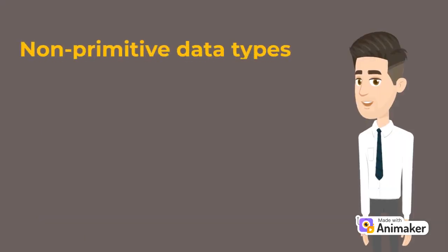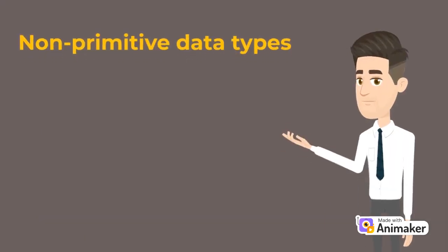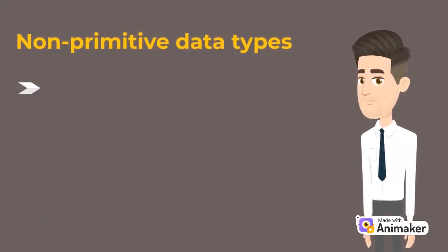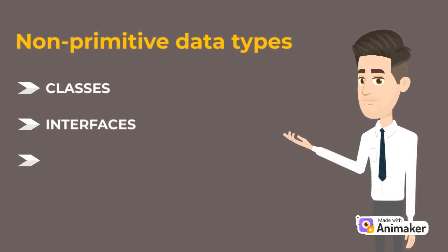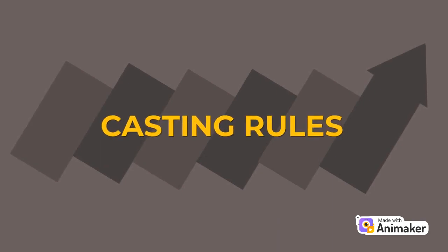Another type is the non-primitive data types. They include classes, interfaces, and arrays. Now let's head to our second part — casting rules in Java.